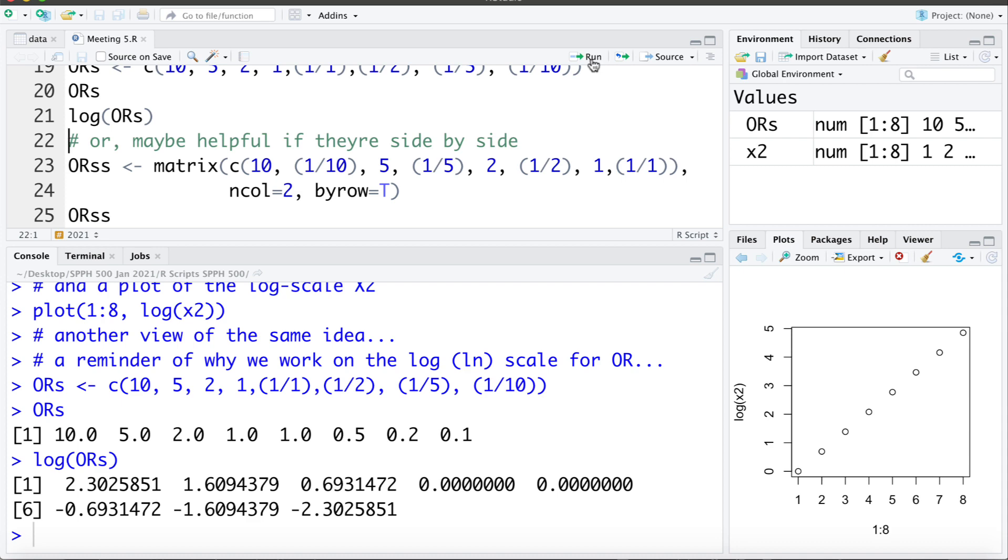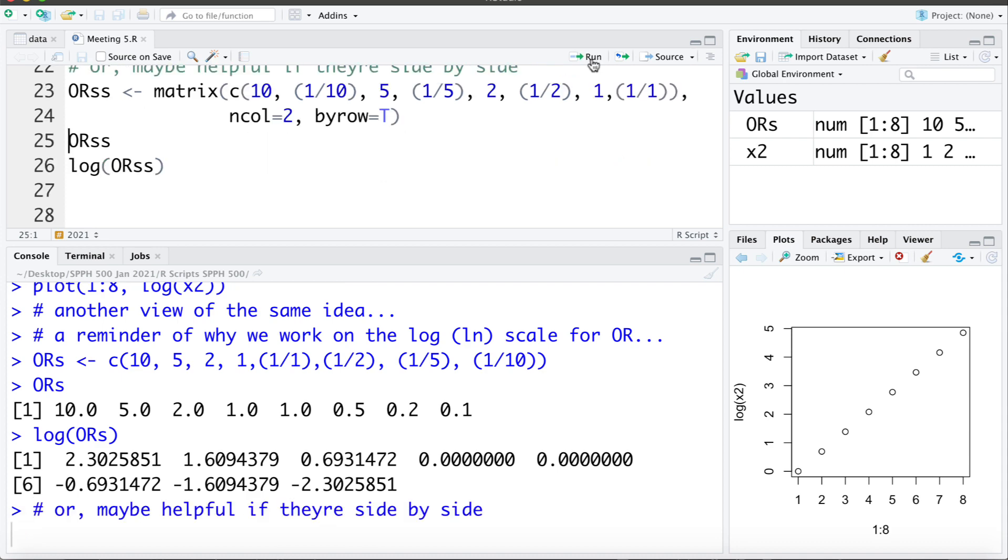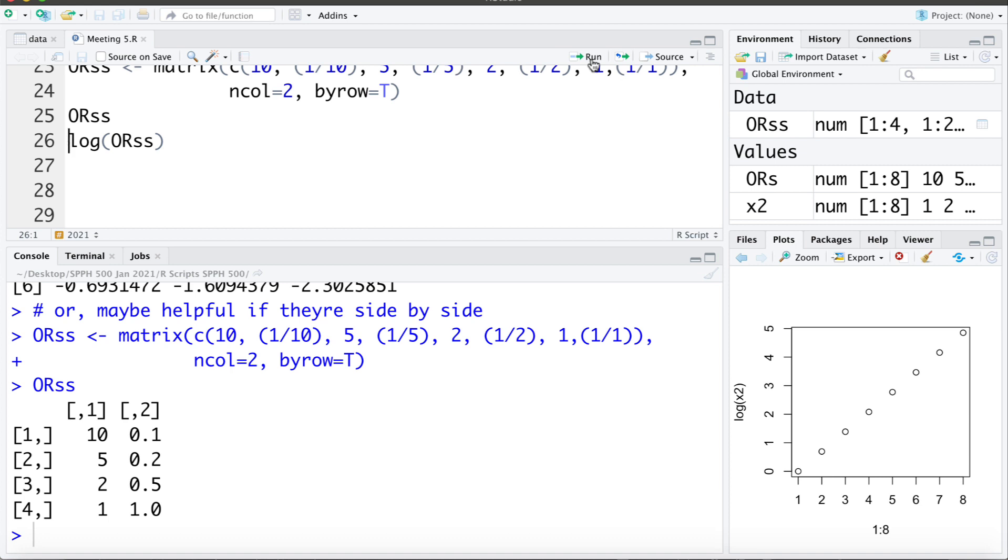So here I'm just going to put them in a matrix. Let's just make that here and here's the odds ratios and put the odds ratio of 10 and 0.1 or 1 tenth beside each other. The odds ratio of 5 and 1 fifth or 0.2 beside each other. Now let's take a look at the log of those.